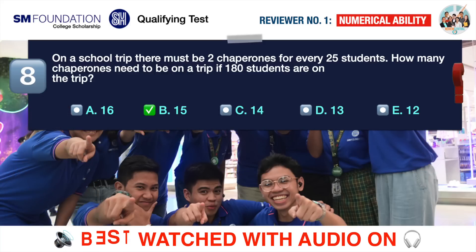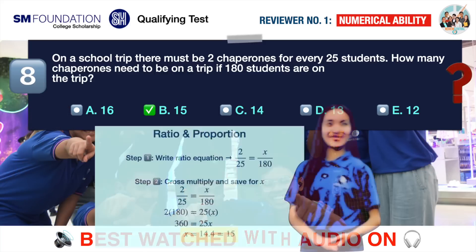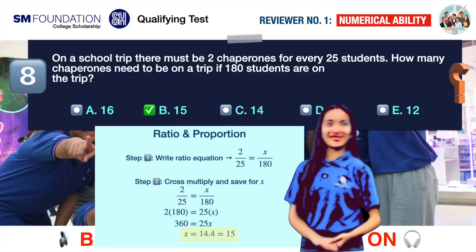The correct answer is B 15. This is a simple ratio and proportion problem. Let's write the ratio and proportion equation as follows. 2 over 25 is equal to X over 180, where X is the number of chaperones needed to accompany the 180 students in the school trip. Cross-multiplying, we simply solve for X and should quickly arrive at X equals 14.4. A chaperone is a person, so of course there cannot be 14.4 persons. But 14 persons won't be sufficient to satisfy the 2 is to 25 chaperone to student ratio, so it will have to be 15.